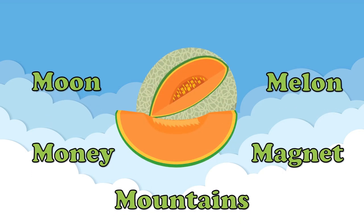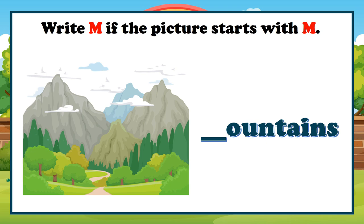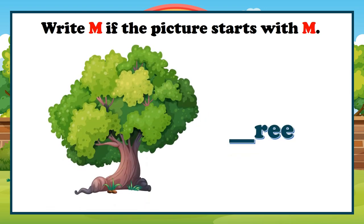What picture do you see? Correct! It's melon. Let's play this game. Write M if the picture starts with letter M. Let's begin with this one. Does this begin with letter M? Yes! It's M for mountains. How about this one? Does this begin with letter M? No! It begins with letter T for tree.